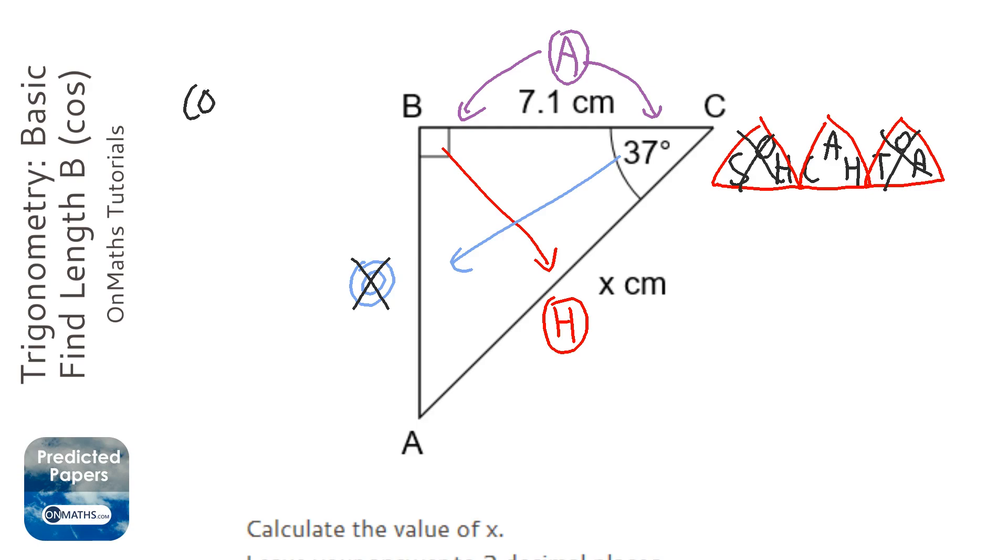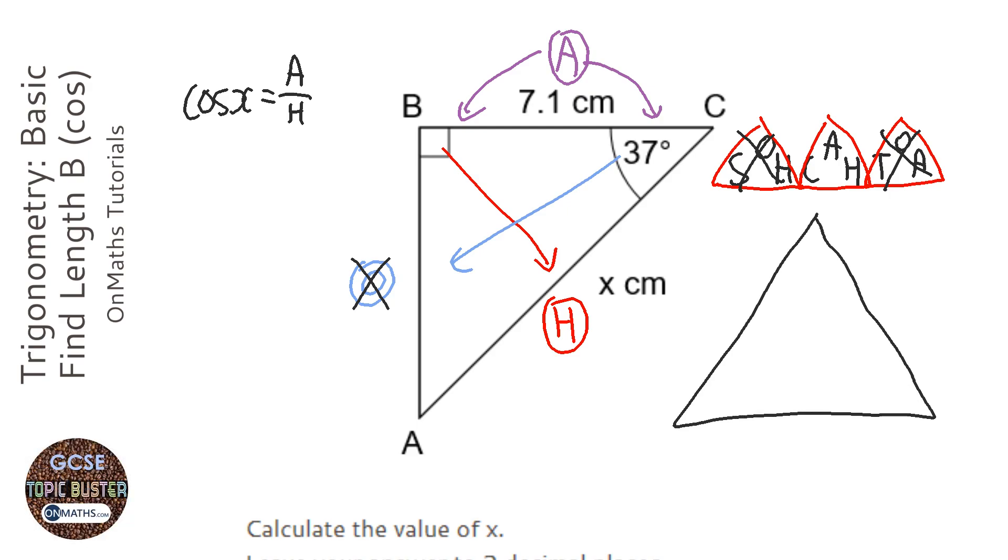Now, at this point, if you want to solve it using the formula, then you substitute in and solve like that. I'm going to use a slightly different method. I'm just going to bung it all in a triangle and let the triangle do the work. The C stands for cos the angle, so it's cos 37. It's always cos the angle. The A at the top is 7.1 on our diagram.